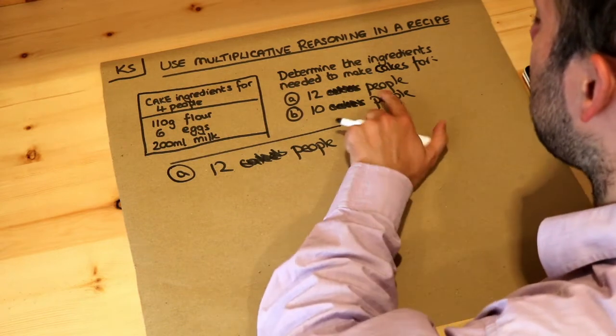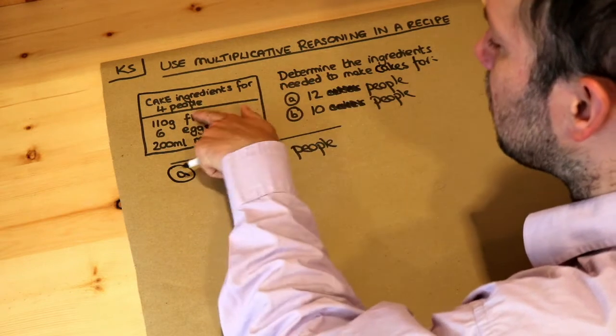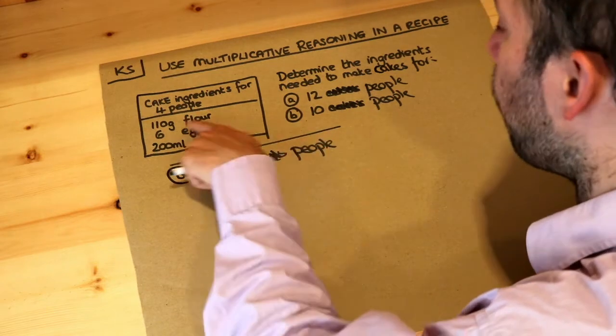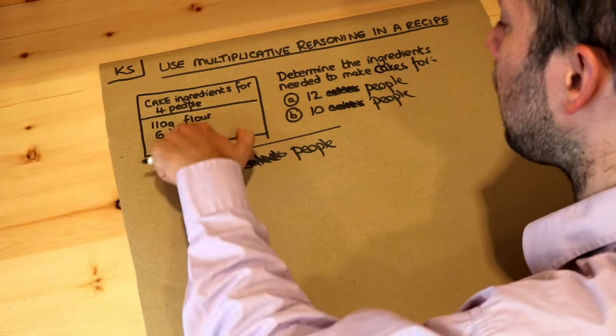But let's say we wanted to make cakes for 12 people. What do we need to do to the ingredients? Well, if these ingredients are only for four people, we're clearly going to need more ingredients. But how many times more? We need to scale the ingredients appropriately.